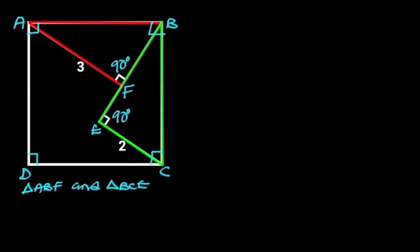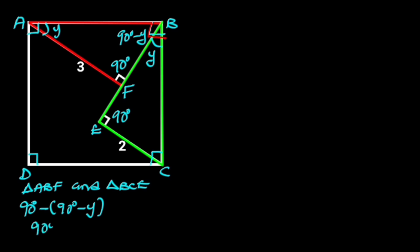In triangle ABF, if we call angle FAB = Y, it follows that angle ABF will be equal to 90 degrees minus Y. The reason is the sum of angles in a triangle. Since angle ABC is 90 degrees, angle EBC will be Y. That is, 90 degrees minus (90 degrees minus Y), which gives us 90 minus 90 plus Y — the 90s cancel and we are left with Y.